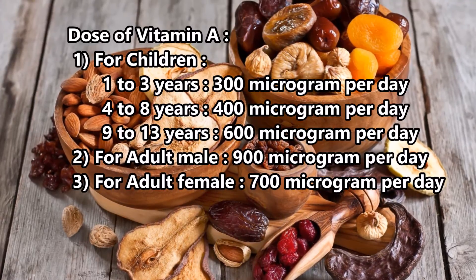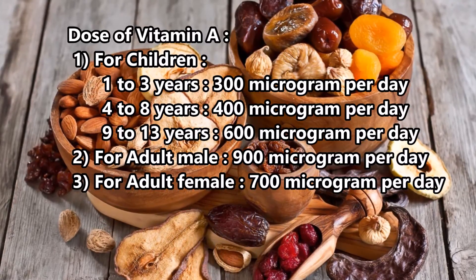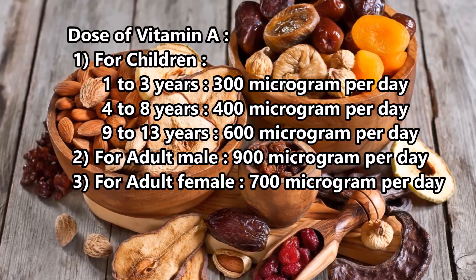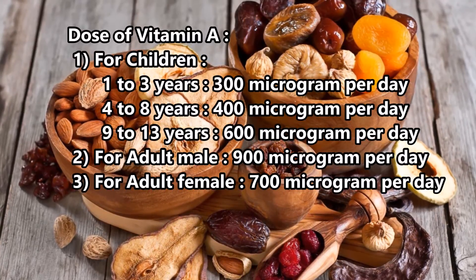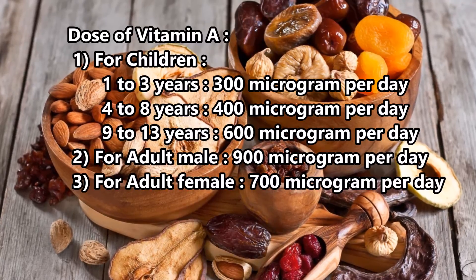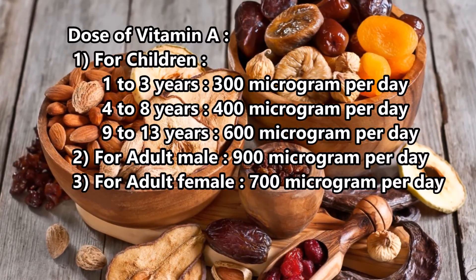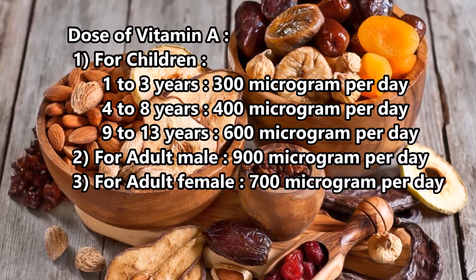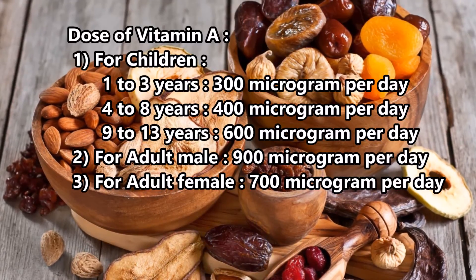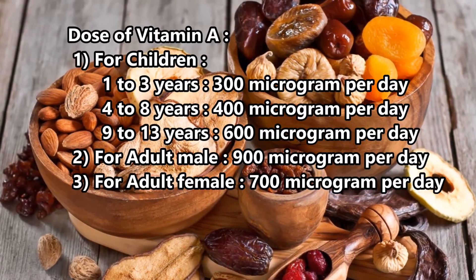Dose of vitamin A: 1. For children — 1 to 3 years: 300 micrograms per day; 4 to 8 years: 400 micrograms per day; 9 to 13 years: 600 micrograms per day. 2. For adult male: 900 micrograms per day. 3. For adult female: 700 micrograms per day.